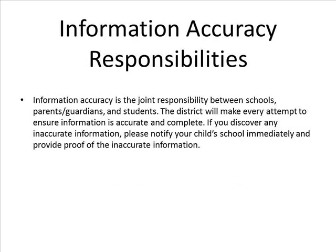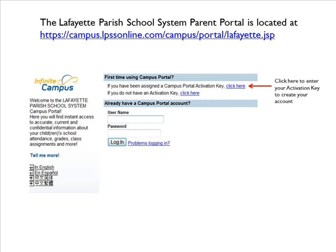Information Accuracy Responsibilities: Information accuracy is the joint responsibility between schools, parents and guardians, and students. The district will make every attempt to ensure information is accurate and complete. If you discover any inaccurate information, please notify your child's school immediately and provide proof of the inaccurate information.